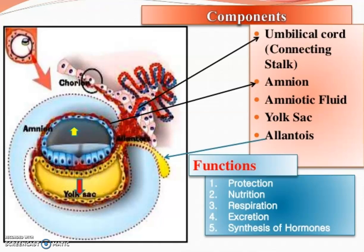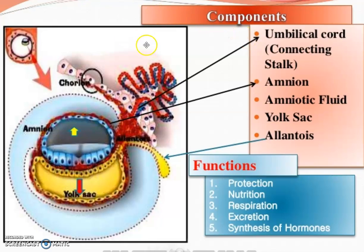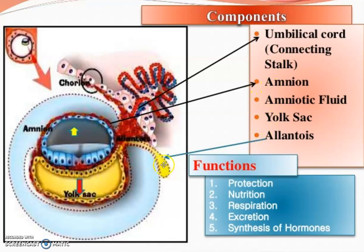...woh banata hai fetal aur extra-embryonic membranes. Aap is diagram mein dek sakte hai - this is the umbilical cord, this is amnion, amniotic fluid is here, yolk sac, and this yellow color structure is called allantois.